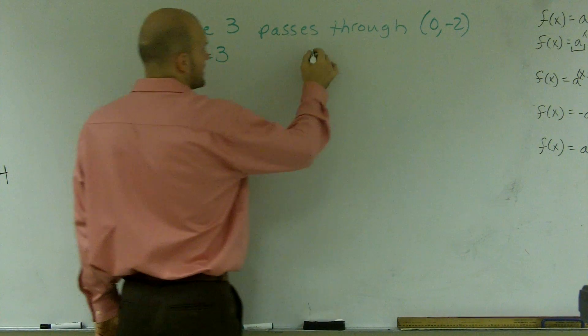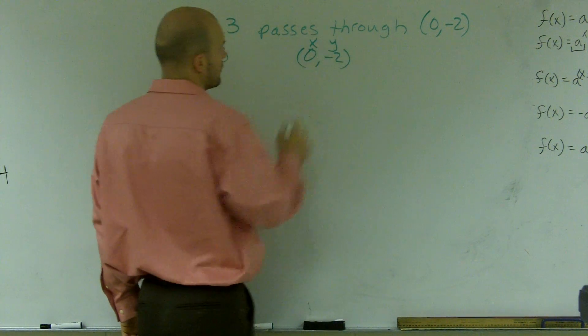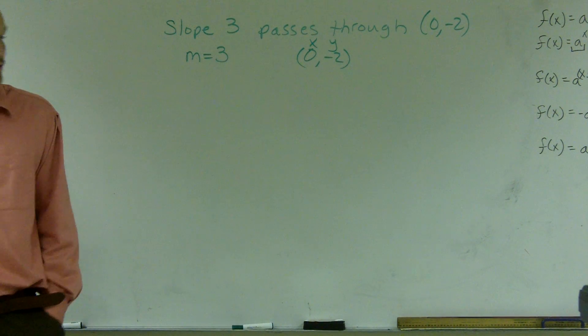And then we have our point, 0, negative 2, which is going to represent our x and our y-coordinate. Now, there's a couple ways we can do this.